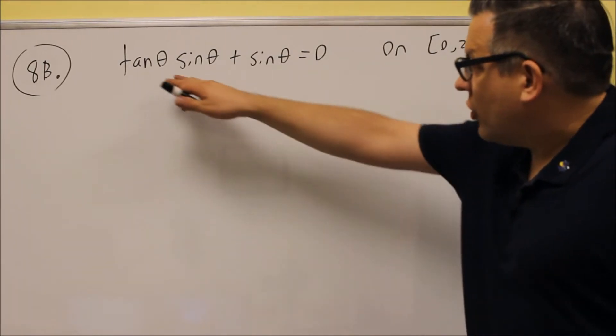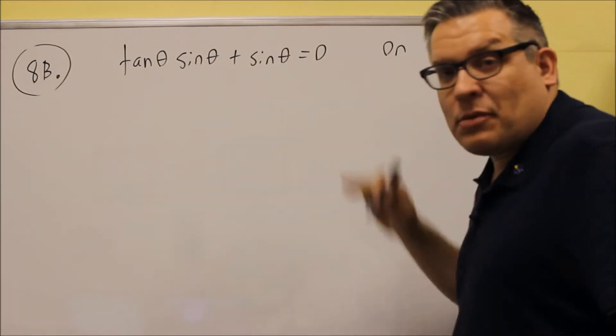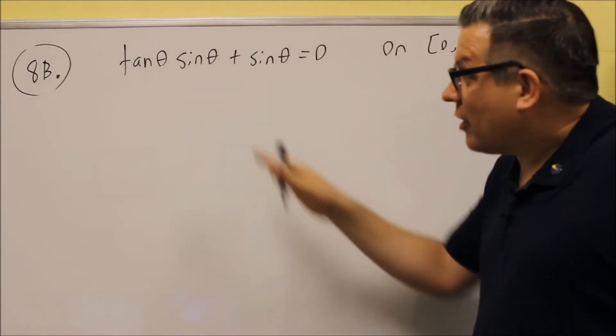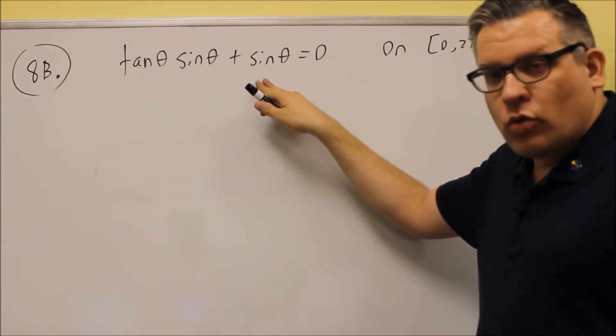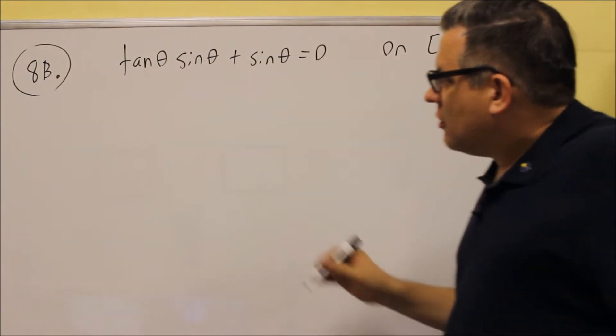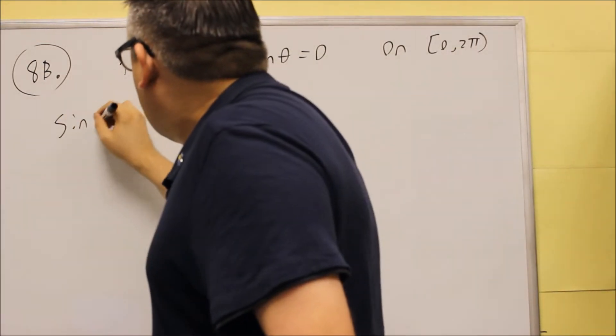Okay, for 8b, notice that we have another one with common factors, so we're going to pull out the common factor from this one. So first, we look at this one, we see that sine is a common factor, so we're going to pull out a sine.